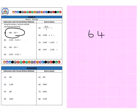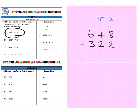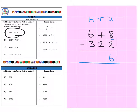That's 648 and we're subtracting 322. The first thing we need to make sure is we have everything in the correct columns — our units lined up, our tens lined up, and our hundreds lined up. Then we can work down each of the columns. So we have 8 subtract 2 which is 6, then 40 subtract 20 which gives us 20, and then 600 minus 300 gives us 300, for a final answer of 326.